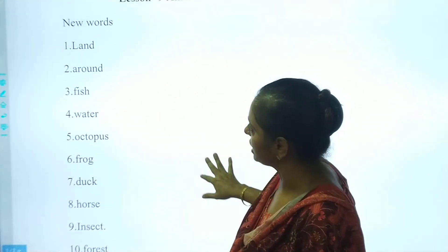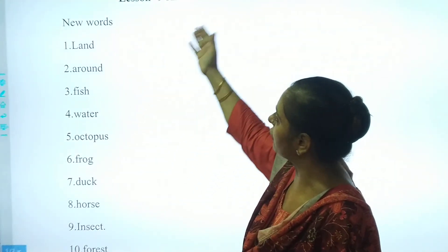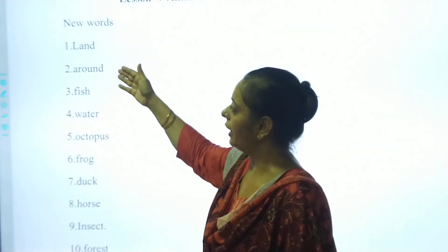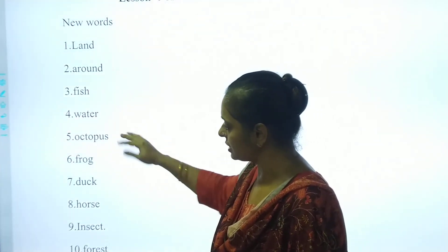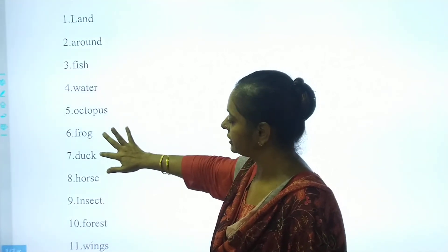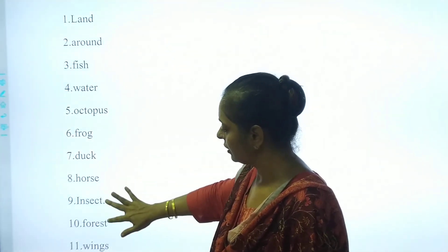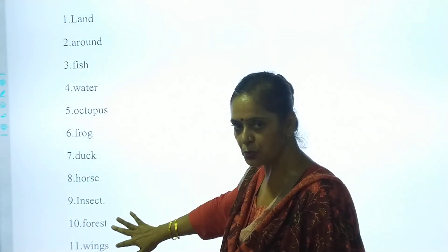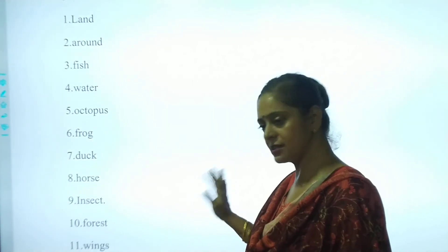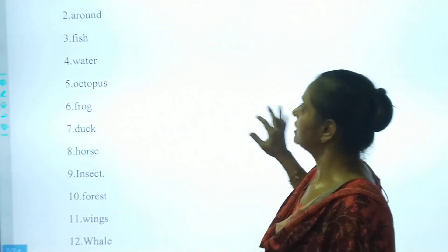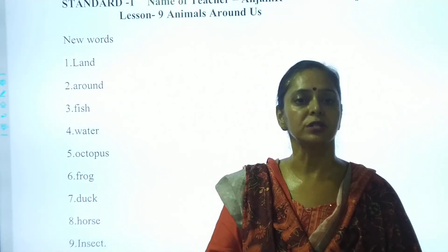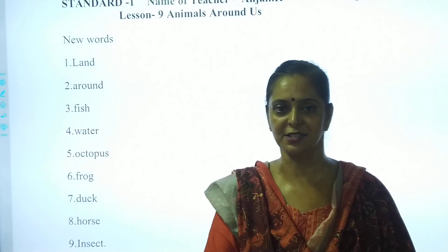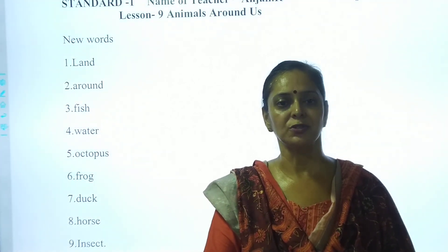So my dear students, today we have done all new words from Lesson 9: Land, Around, Fish, Water, Octopus, Frog, Duck, Horse, Insect, Forest, Wings, and Whale. It was all from Chapter 9, Animals Around Us. In next class we will be moving with questions, answers, and completing the sentences. Till then, happy learning. God bless you all.